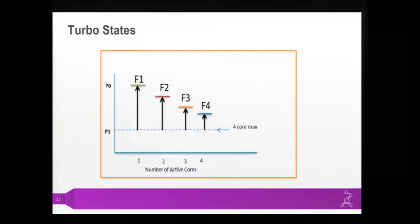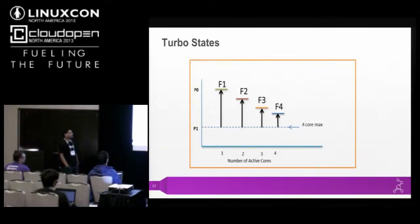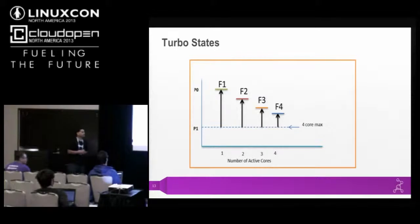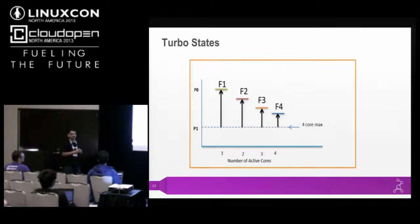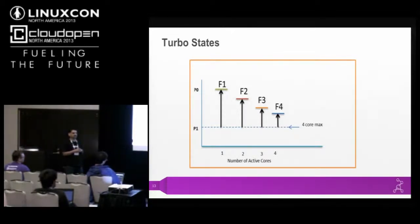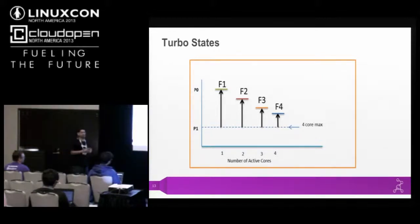Between P1 and P0 there may be many sub-states. The dotted line represents the guaranteed performance the OS can request. Between P1 and P0, states like F1, F2, F3, F4 depend on how many cores are active and what your thermal headroom is — if you have more thermal headroom you can get higher performance. These are dynamically decided by the processor. Because this range is beyond OS control, if you need a short-term solution for reducing power, you can disable that range, but it will impact performance.